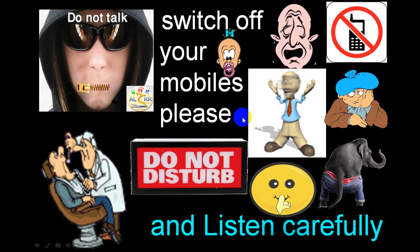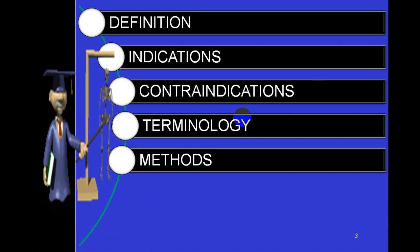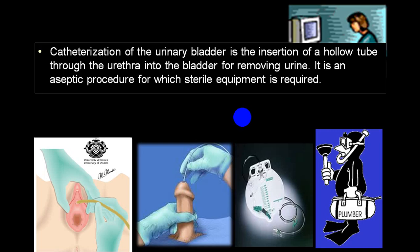I am Dr. Janak Patel, starting with another topic: catheterization, which is very commonly done in both urinary incontinence as well as retention of urine. We'll be talking about the definition, indications, contraindications, different terminology, methods, precautions, and complications. Catheterization means insertion of a hollow tube through the urethra into the bladder for removing urine. It is an aseptic procedure for which sterile equipment is required.